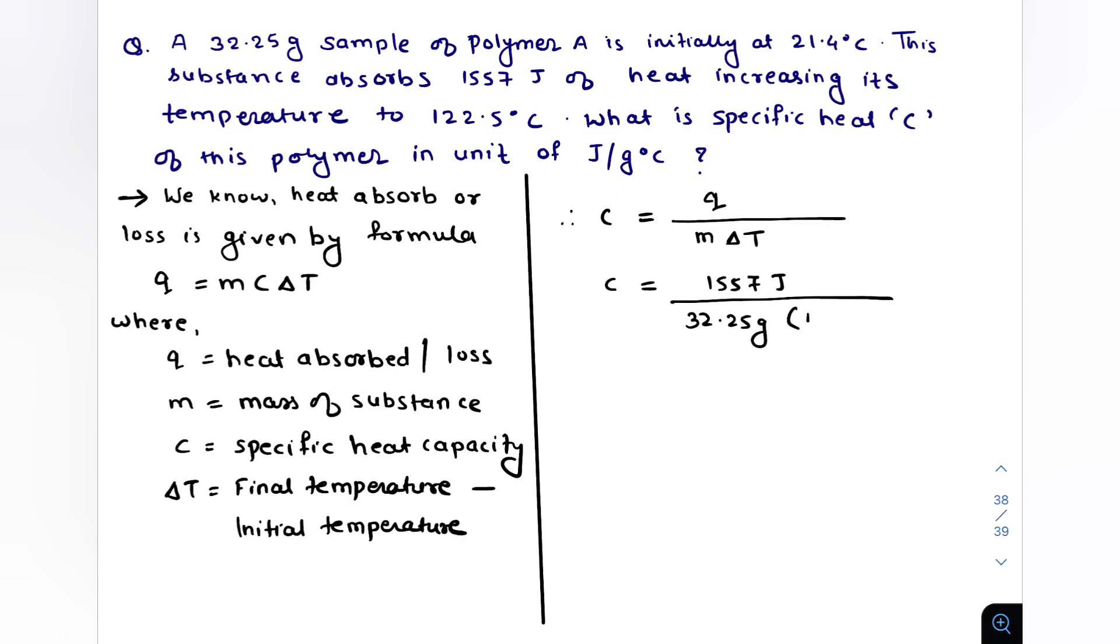Multiply by delta T which is temperature difference 122.5 minus 21.4 degree Celsius. So C is equal to 1557 joules divided by 32.25 grams multiplied by 101.1 degree Celsius.